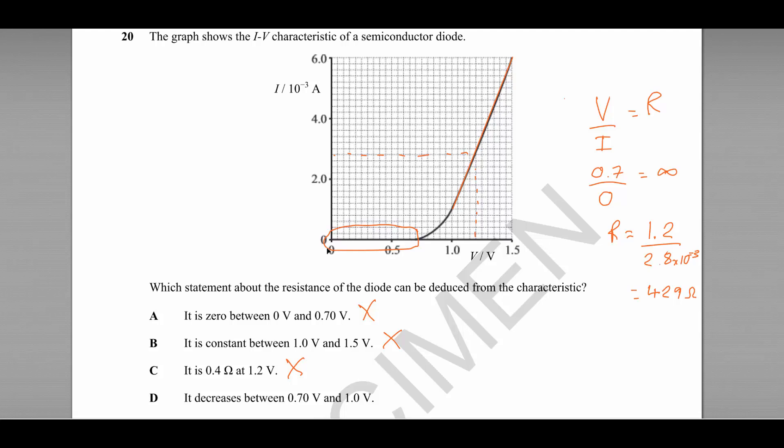Statement D: the resistance decreases between 0.7 and 1 volts. Well, we know that the resistance in this first section is infinitely high, and the resistance in this section is not infinitely high anymore. So it certainly has decreased during this region here between 0.7 and 1 volts. So our answer is D.